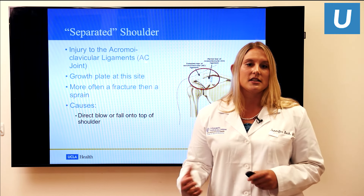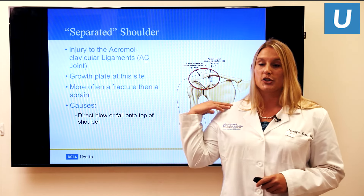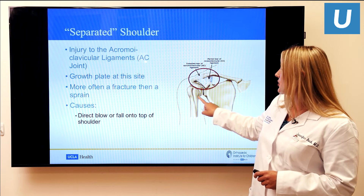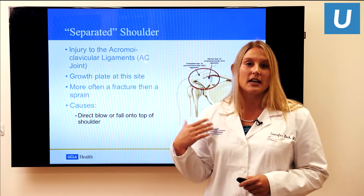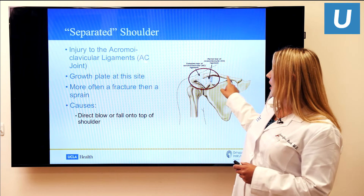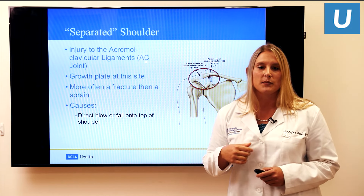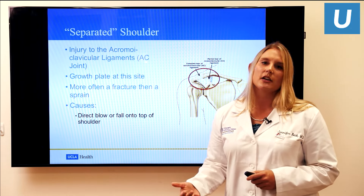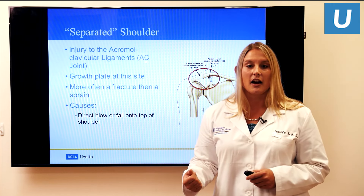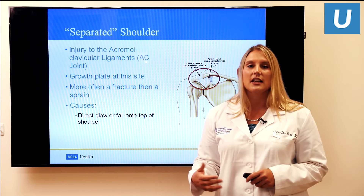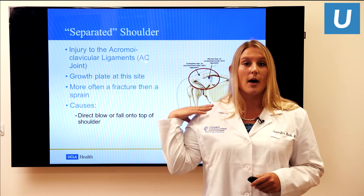A separated shoulder involves the AC joint — the acromioclavicular joint — which is up on the top portion of your shoulder, as opposed to the shoulder joint or glenohumeral joint. The AC joint connects the clavicle — the long bone in the front portion of the shoulder — and the acromion, a small portion of bone off your scapula. In kids, there's a growth plate in this area. Where adults often get tears and injuries to the ligaments, kids often get fractures. The most common cause is a direct blow to the top or side portion of the shoulder, such as a football tackle or falling onto the shoulder.